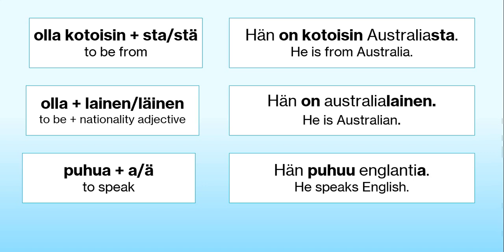Puhua is a so-called partitive verb. This means that it's accompanied with the partitive form, and in the case of languages it means that you'll be adding the ending A or Ä at the end of the language, depending on the vowel harmony. For example, to say 'he speaks English', you can say hän puhuu Englantia.